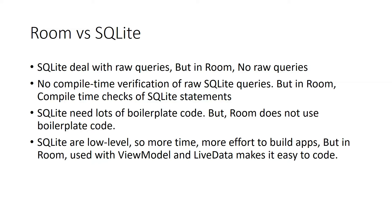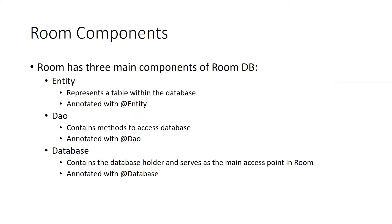There are three components in Room database. First, Entity — an entity represents a table in the database; one entity means one table, and one class represents one entity. Second, DAO (Data Access Object) — a class that has methods to access the database for insert, update, and delete operations; we declare methods without implementing query code. Third, Database — the holder that links all entities and DAOs and is the single point of contact to access the Room API.